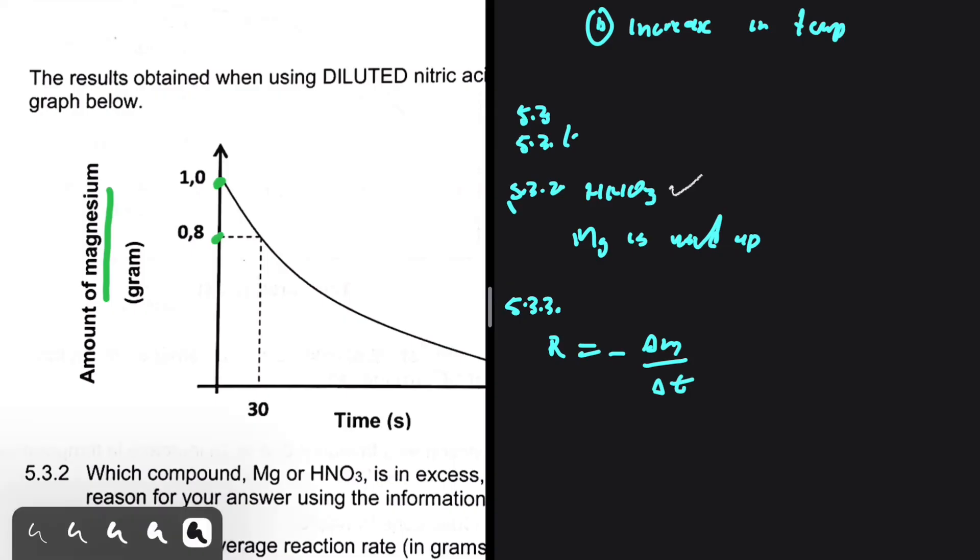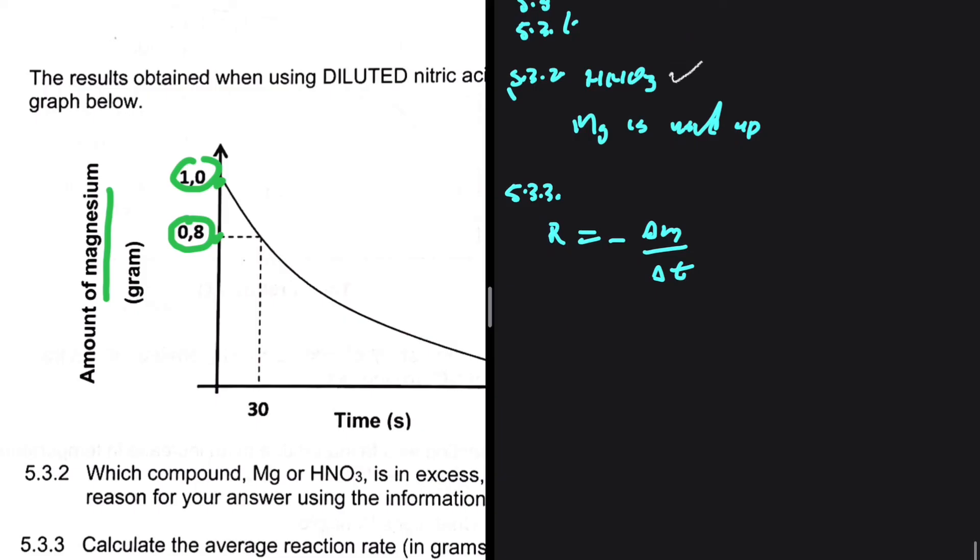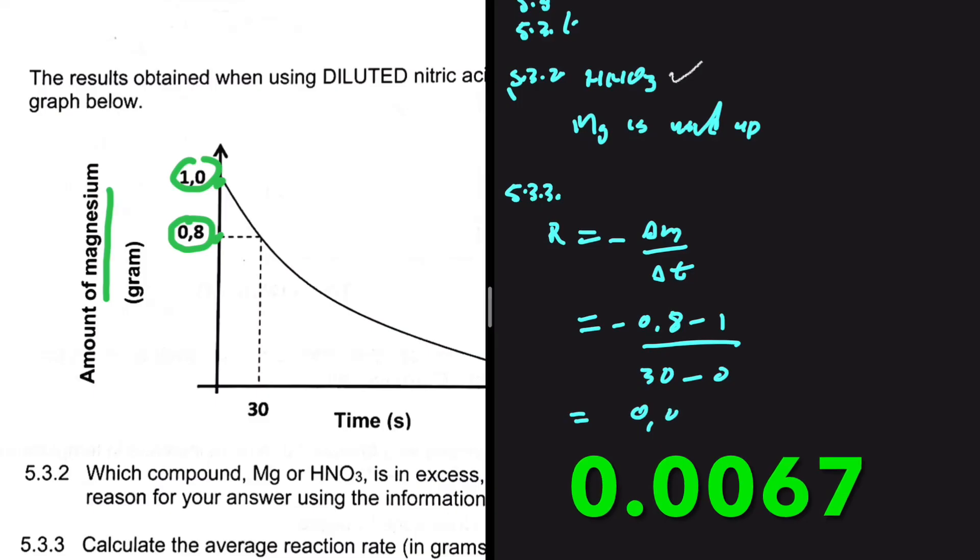Why am I saying minus? Obviously I can see that my final mass is 0.8 and my initial mass is 1. 0.8 minus 1 is negative. So I'm putting a minus sign so that I can compensate for that. But I still think you would get your marks if you don't put that minus sign. Anyway, let's substitute. Minus mass final, that is 0.8, mass initial is 1, divided by time final, 30 seconds, and time initial is 0. This equals 0.0067 grams per second.